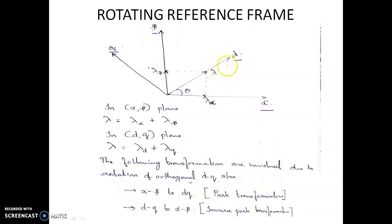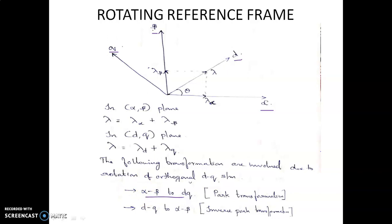The angular displacement of the axis is theta, so d-theta/dt gives the angular speed. The following transformations are involved due to the rotation of the orthogonal DQ system. One transformation is Alpha-Beta to DQ, which uses the rotating reference frame — and that is what we call Park Transformation.